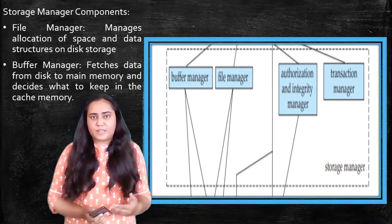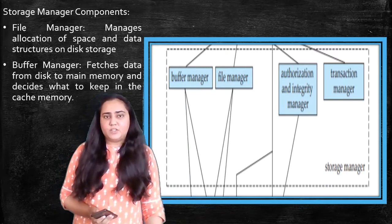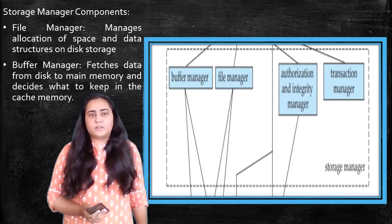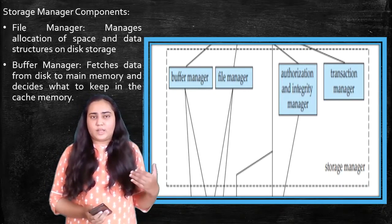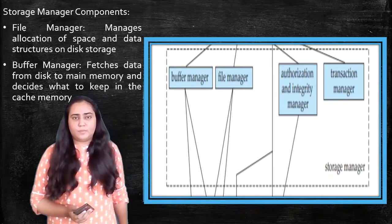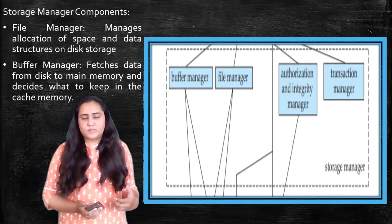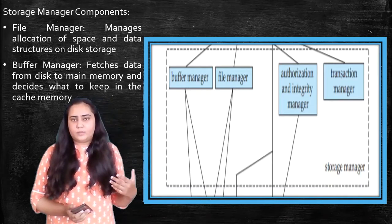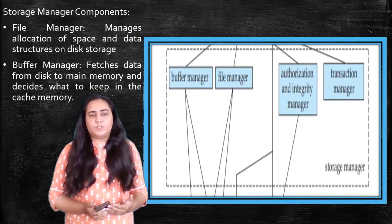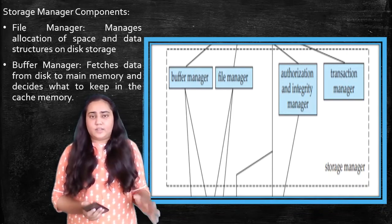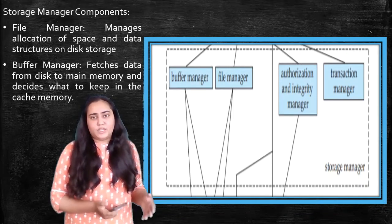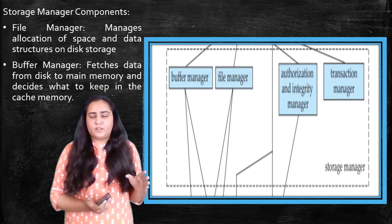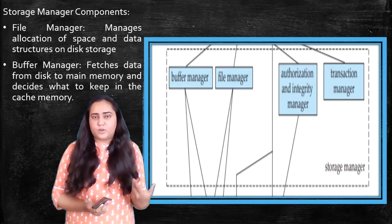There's also a buffer manager which you can see right here. The buffer manager fetches data from the disk to the main memory and then it decides what to keep in the cache memory. If you know, your system consists of several types of memories. One of them is the secondary memory, which is where your data actually lives, and then there's the main memory, which is much more expensive than the secondary memory, and this is where your data is brought when you want to work on it.